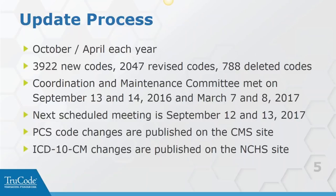Let's talk about the update process. The codes for ICD-10 are updated every year, possibly twice a year - in October and in April. April was added several years ago because we had some new codes for things like the SARS virus, and we had some changes to the disposition discharge status that impacts the DRGs, and they happened mid-year, so we had a grouper change in the middle of the year. For codes to happen in April, they have to be pretty significant. Most of the time, everything happens in October because October is the federal fiscal year - it's the beginning of the fiscal year.